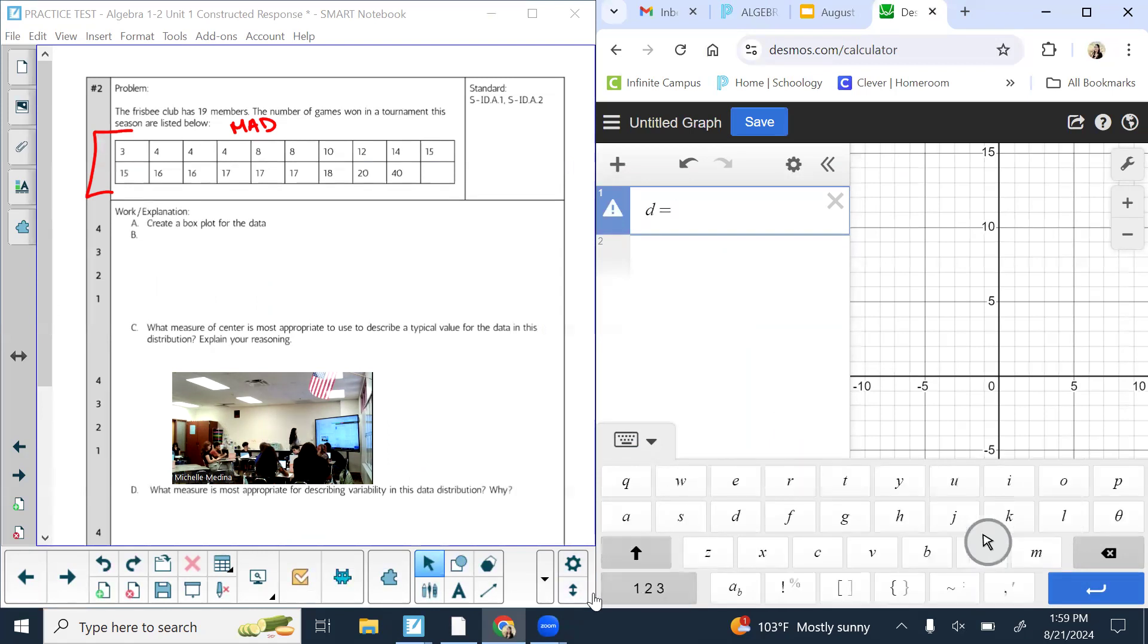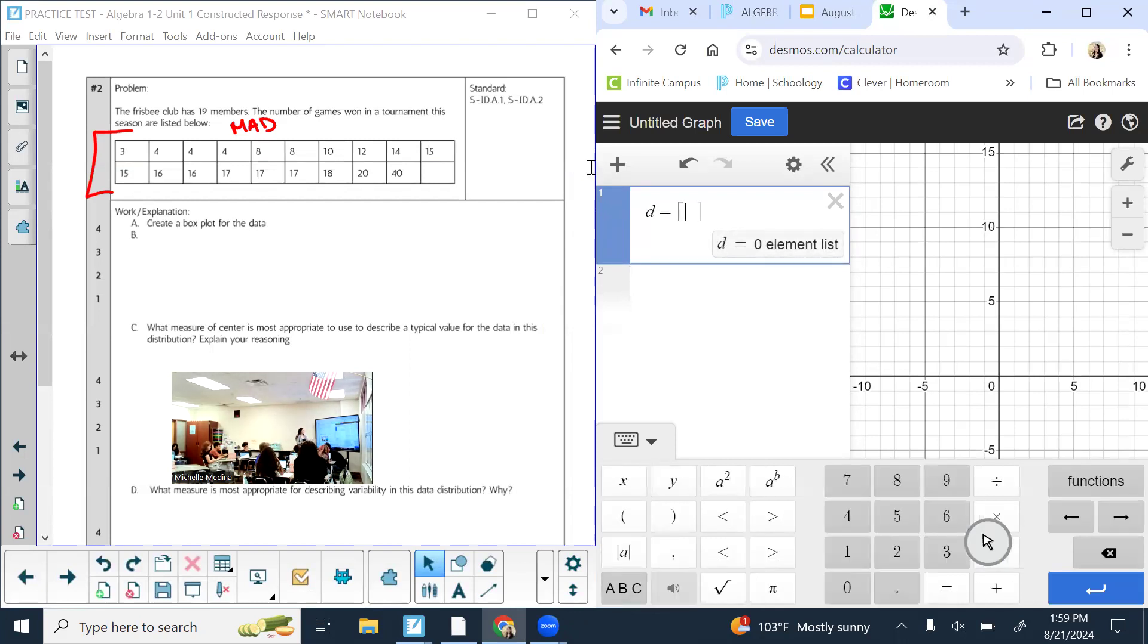So hopefully you guys know how to use your technology. If you don't, this is how you make Desmos things. Just pick a letter, equals bracket, type in your data, and use commas to separate it.